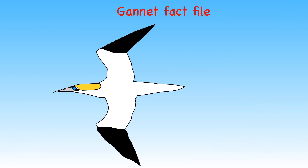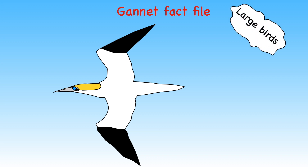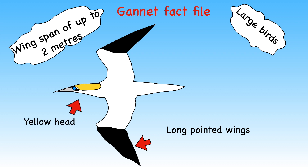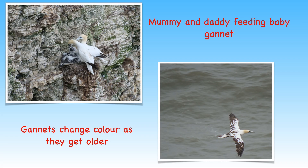Gannets are much larger birds. They have a wing span of up to two metres and their wings are long and pointed. Adult gannets have white and black feathers and a yellow head. Gannets start out life brown and white, but as they get older their colour changes.